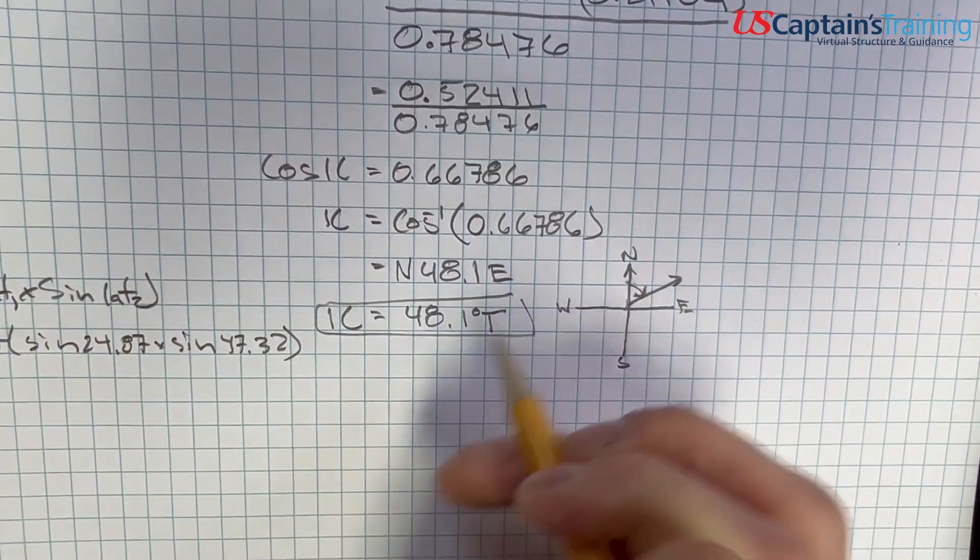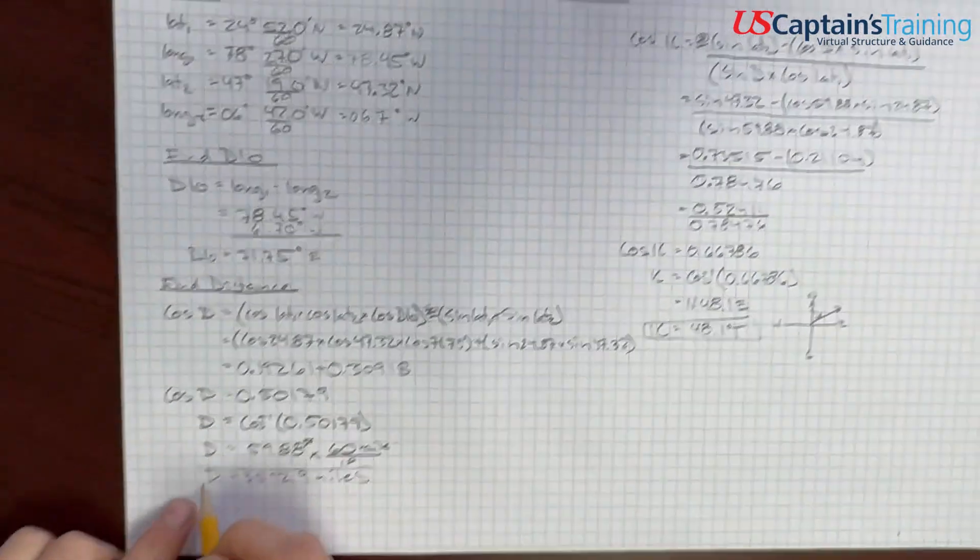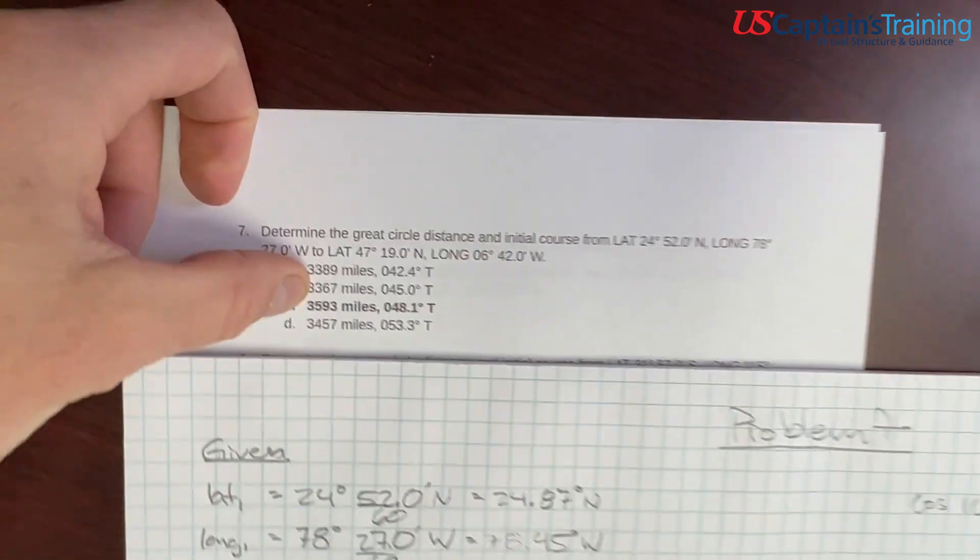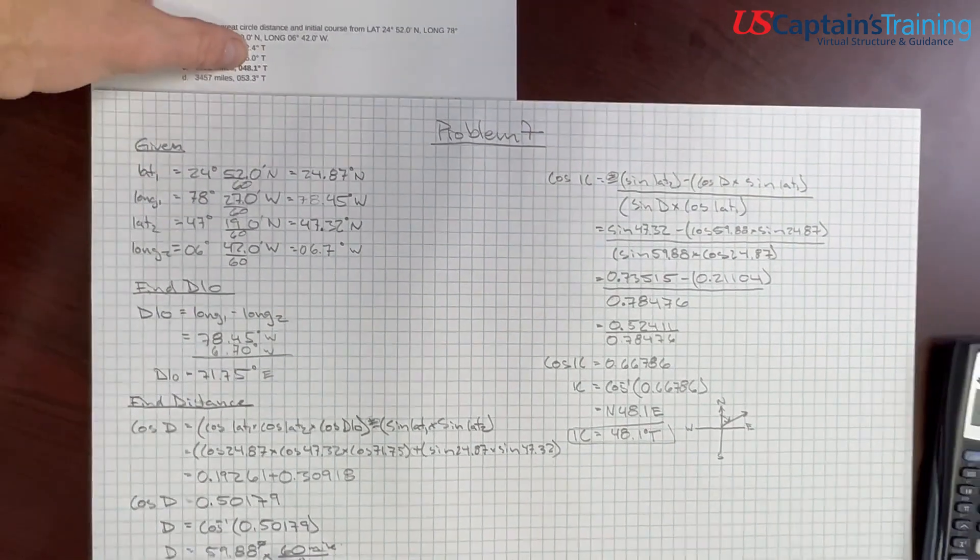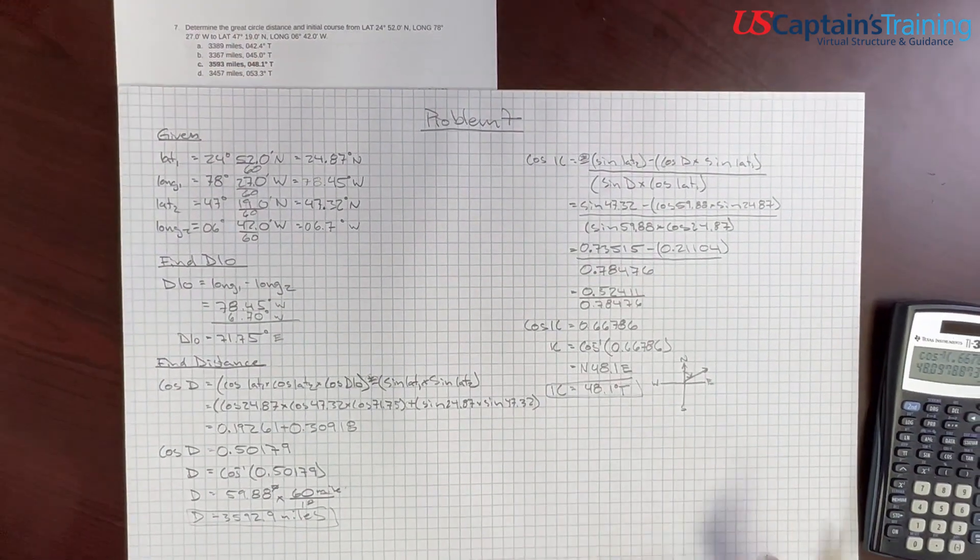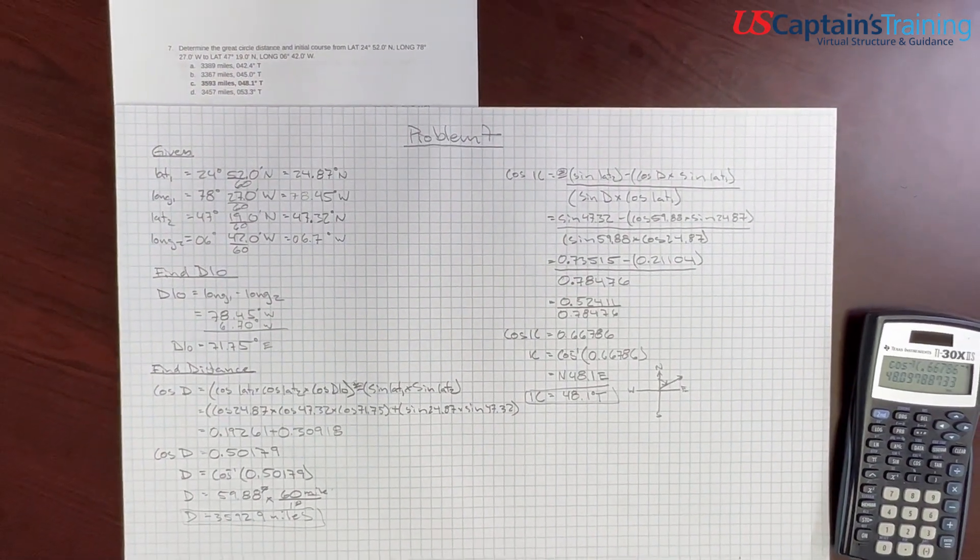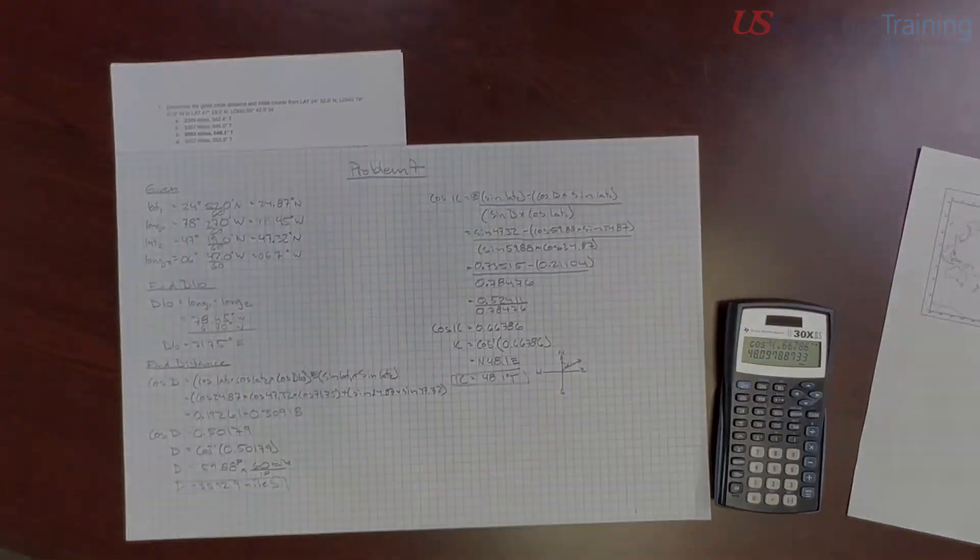We got this, and we have this, and now let's look at our answers, see if we got close. It looks like the right answer. 53.93 and 48.1. We nailed it. That's the answer to practice problem 7.